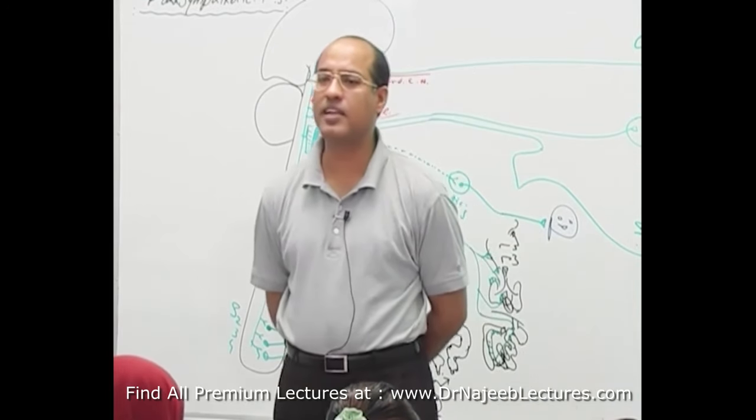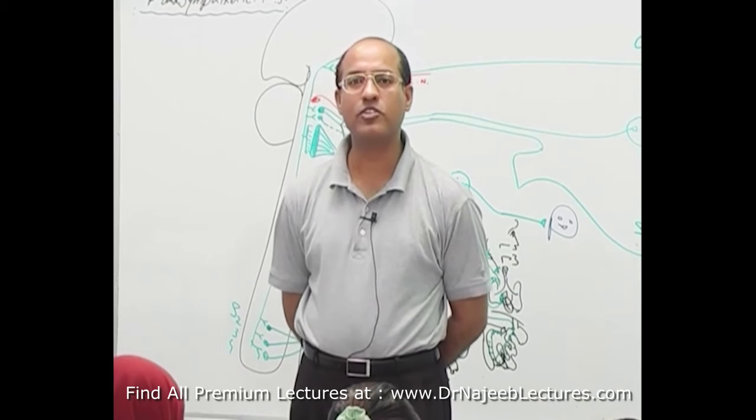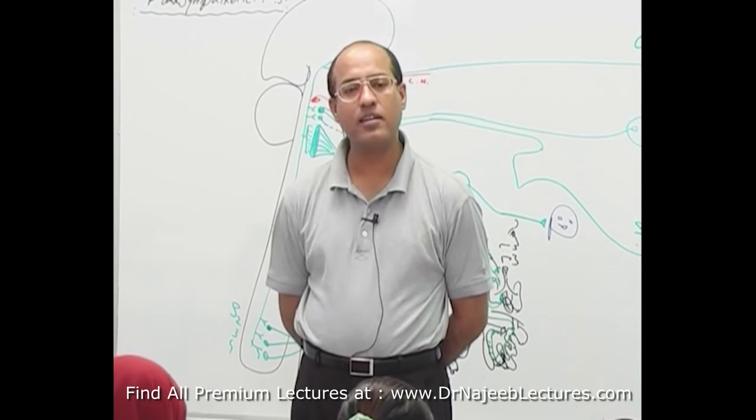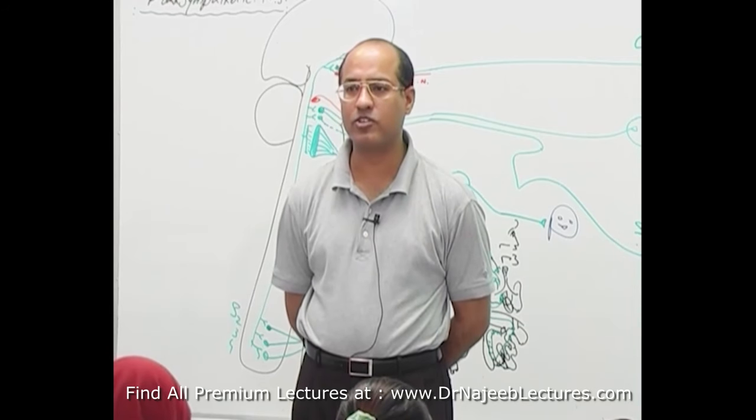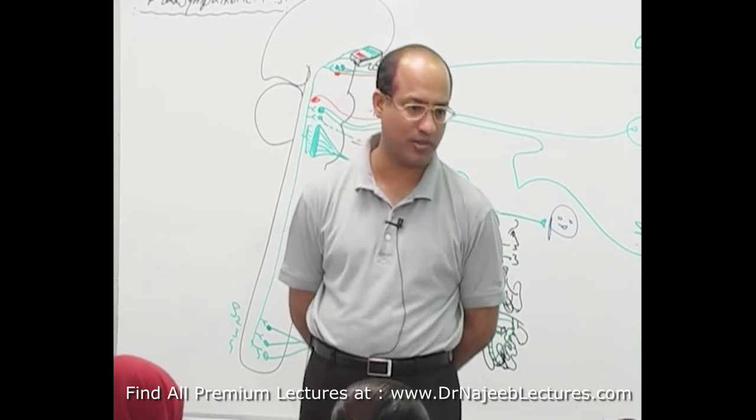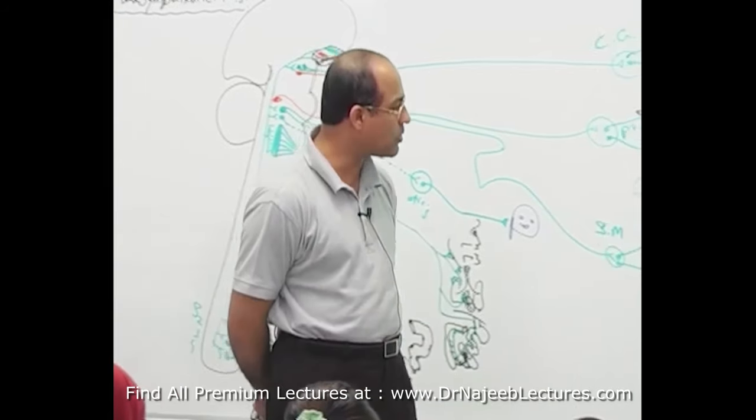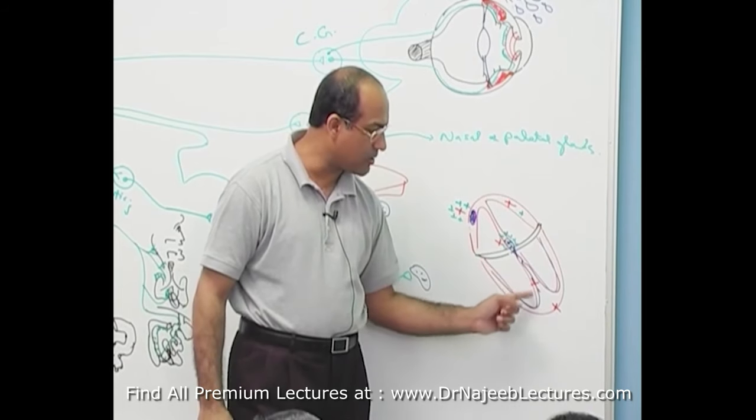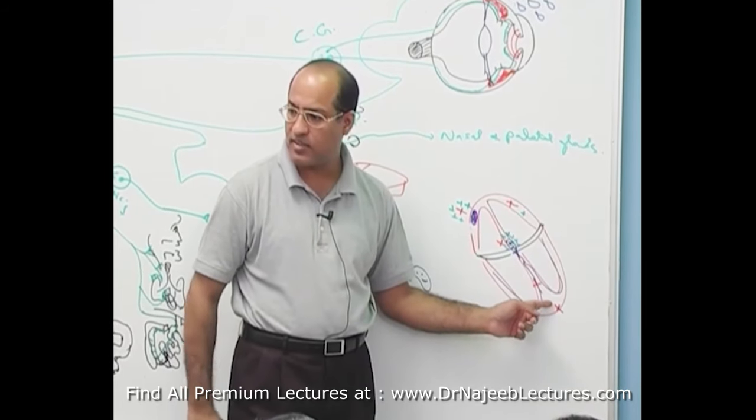As far as heart is concerned, sympathetic receptors are diffusely present on the myocardium but parasympathetic fibers are specially concentrated on S node and AV node. Now I want to ask one interesting question. These are what? Right bundle branch and the left bundle branch.